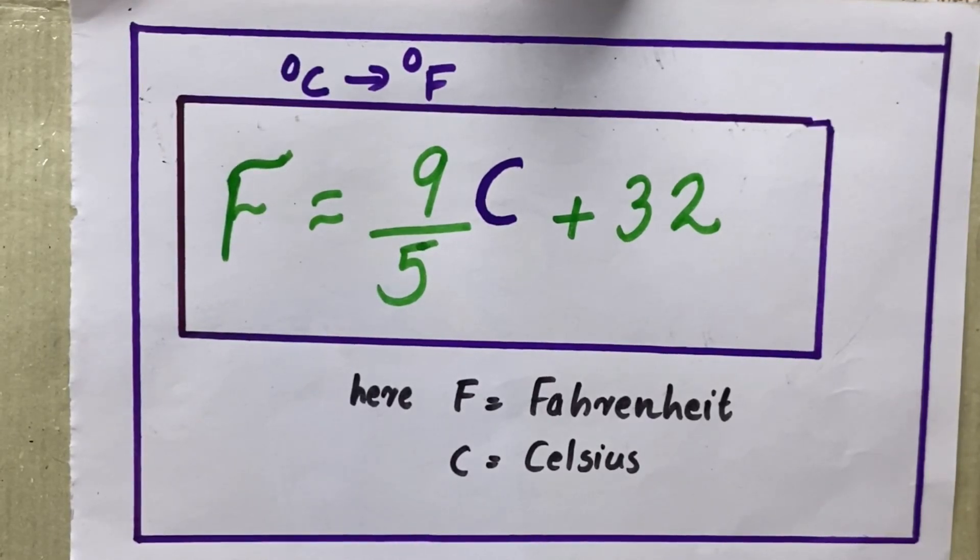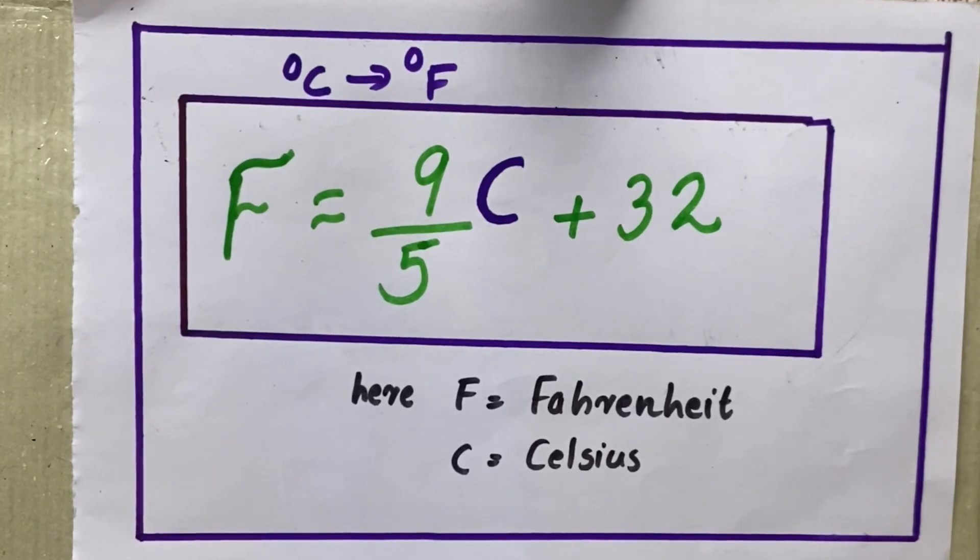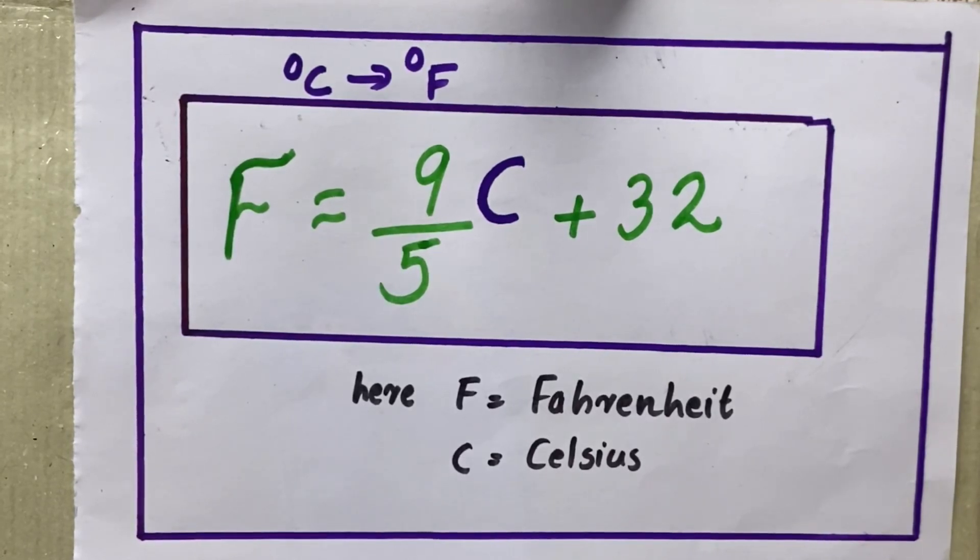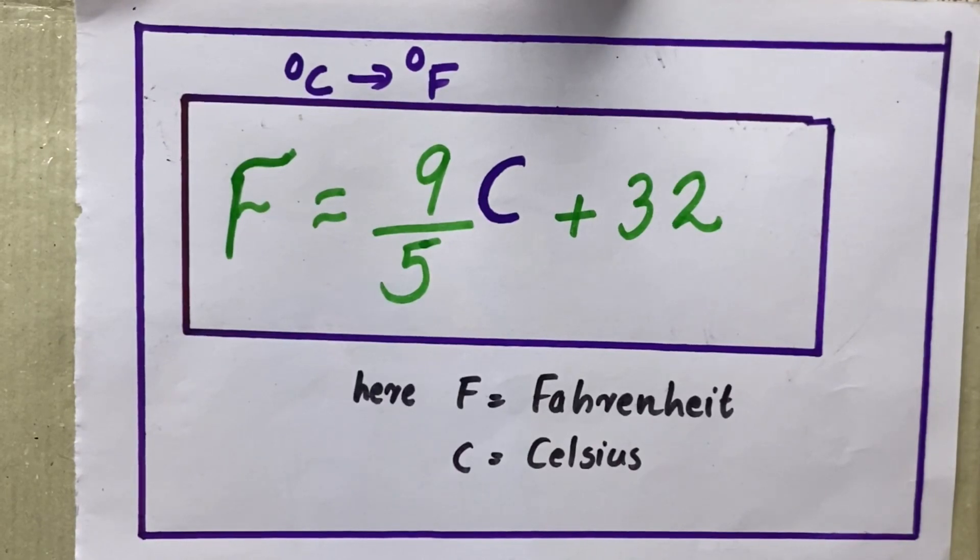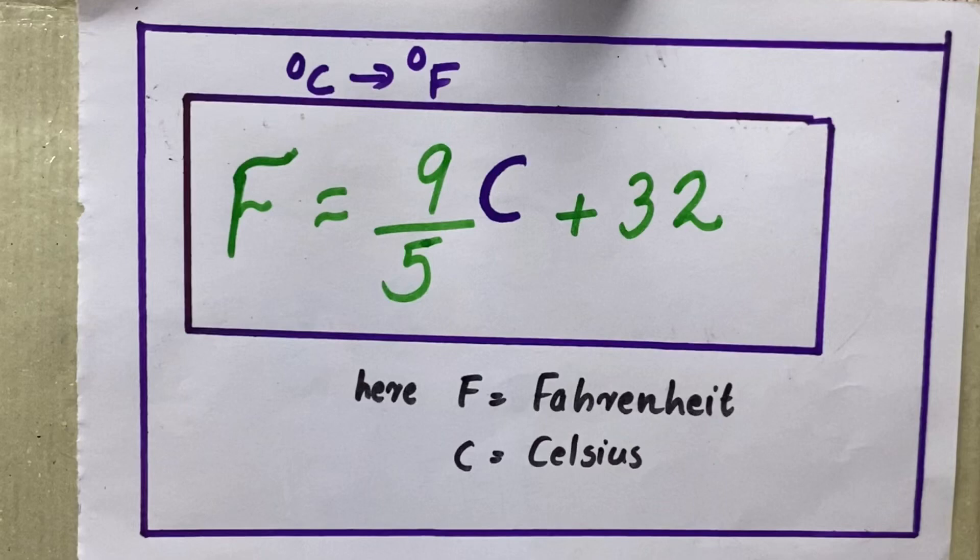F equals 9 by 5 Celsius plus 32. This is the equation for that, you have to memorize this. What is F here? Fahrenheit. C is Celsius.